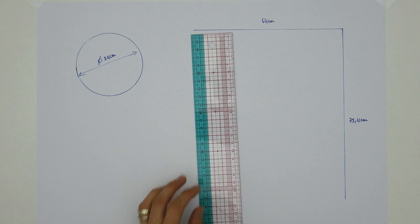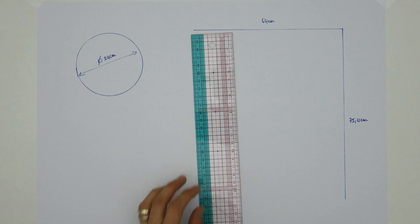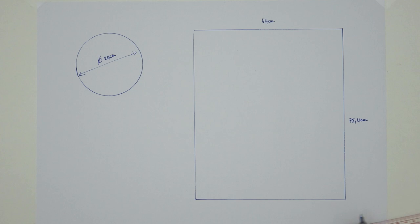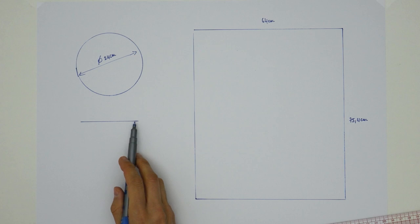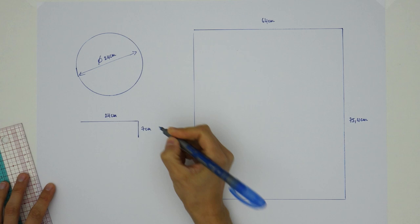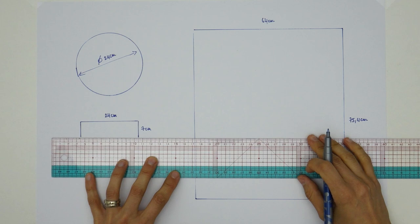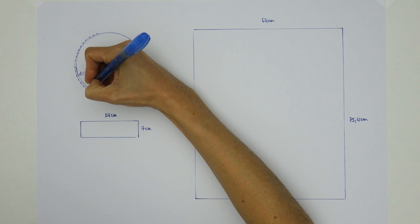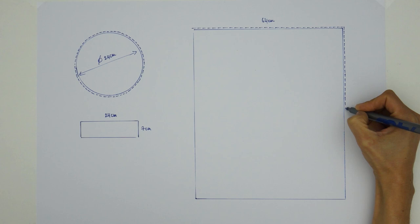Thanks to these two measurements it's now possible to trace the whole rectangle before tracing another rectangle for the bolster's handle. The length equals the diameter of the circle and as for the width it's up to you to decide and then multiply this number by 2. I went for 3.5 cm so times 2 it's 7 cm.